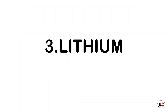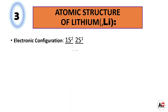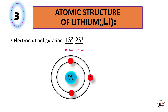Now lithium. Atomic structure of lithium. The atomic number of lithium is 3, which shows it has three electrons. So the electronic configuration of lithium will be 1s2, 2s1. With the help of this electronic configuration we will draw the atomic structure of lithium. It has three protons and four neutrons inside the nucleus and three electrons around the nucleus: two electrons in the K shell and one electron in the L shell.